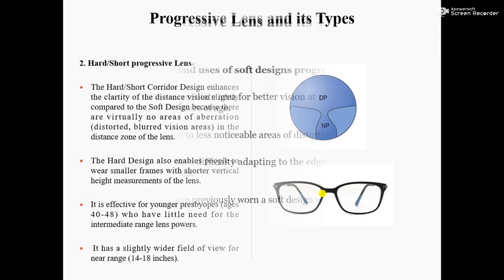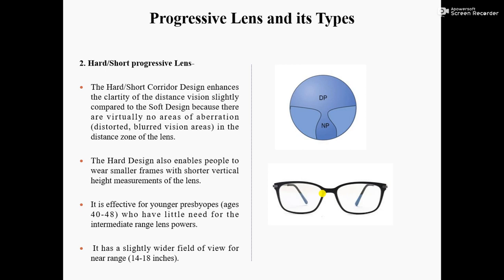The hard oblique short corridor design enhances the clarity of distance vision slightly compared to the soft design, because there are virtually no areas of aberration or distorted blurred vision in the distance zone of the lens. Compared to the soft design, the distance part is wider so there is no distorted or blurred vision in the distance portion.